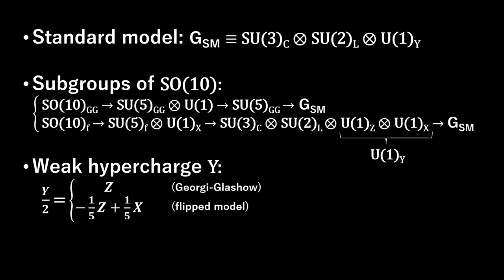The weak hypercharge Y of the standard model must be a linear combination of Z and X. Z is the generator of SU-5 which commutes with the generators of color SU-3 cross left-handed SU-2.